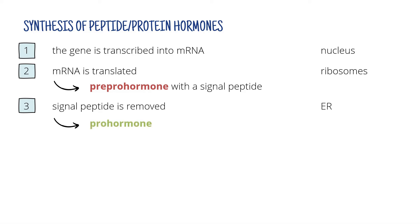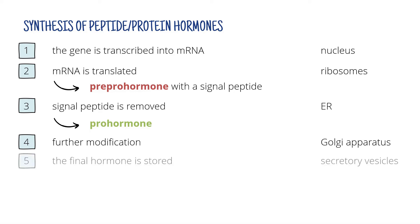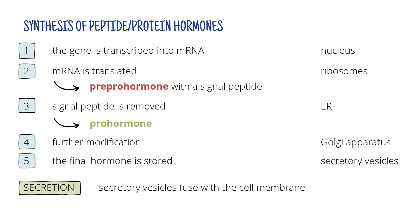This prohormone goes to the Golgi apparatus, where the peptide sequence is further modified and the final hormone is put into secretory vesicles and is ready for secretion. When the hormone is needed, secretory vesicles simply fuse with the cell membrane and the hormone is secreted.